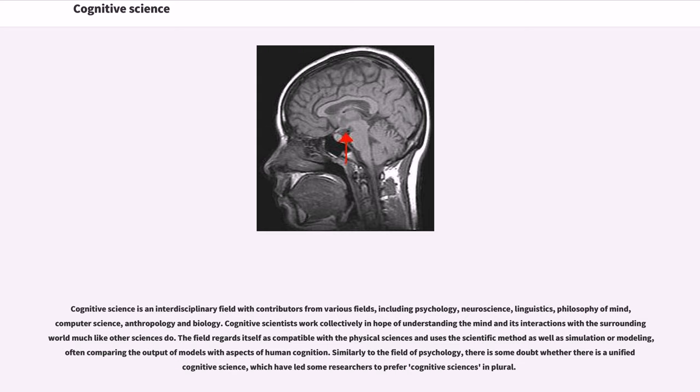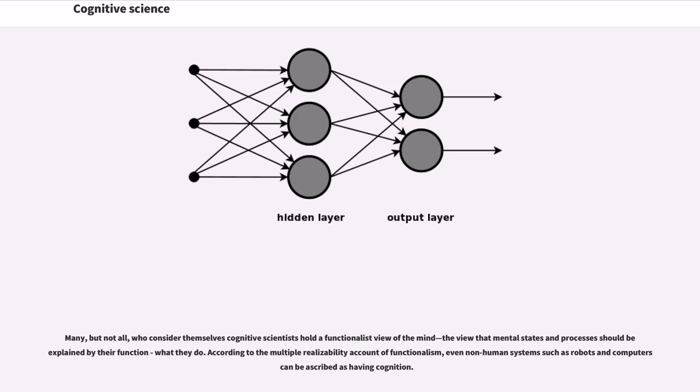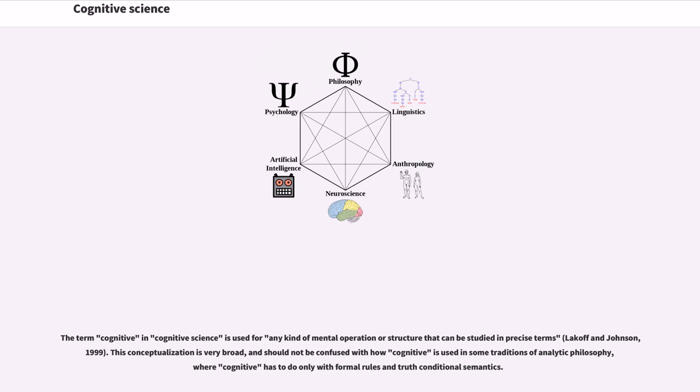Many, but not all, who considered themselves cognitive scientists hold a functionalist view of the mind, the view that mental states and processes should be explained by their function, what they do. According to the multiple realizability account of functionalism, even non-human systems such as robots and computers can be ascribed as having cognition. The term cognitive in cognitive science is used for any kind of mental operation or structure that can be studied in precise terms. This conceptualization is very broad, and should not be confused with how cognitive is used in some traditions of analytic philosophy.